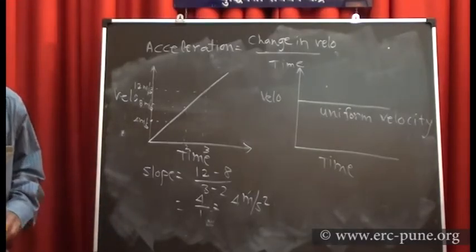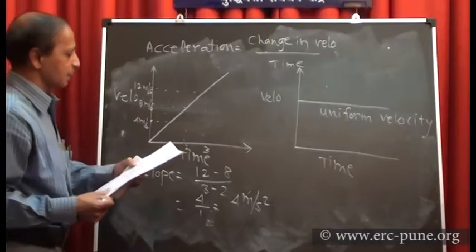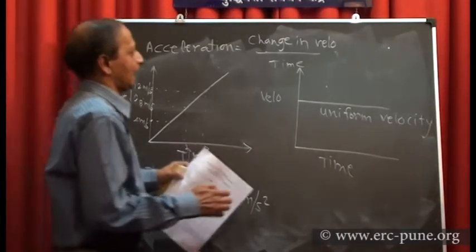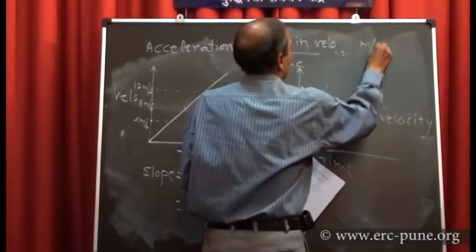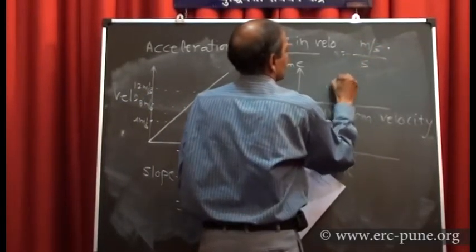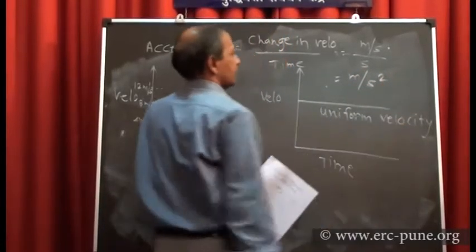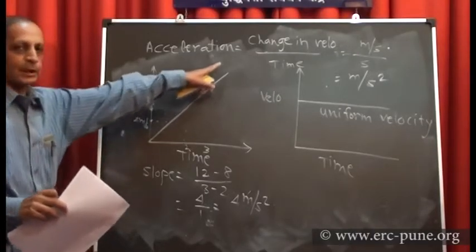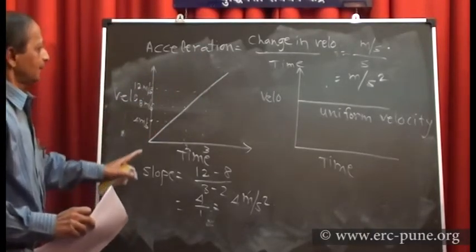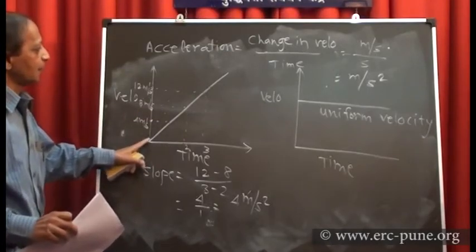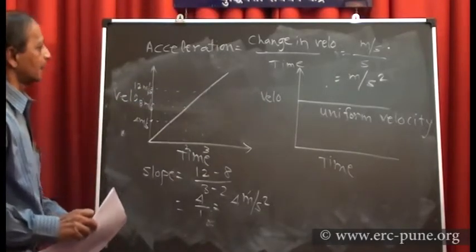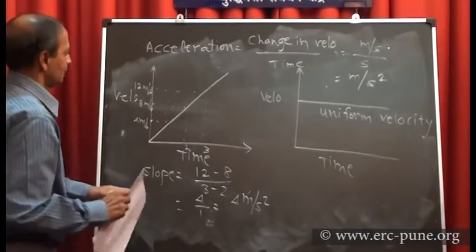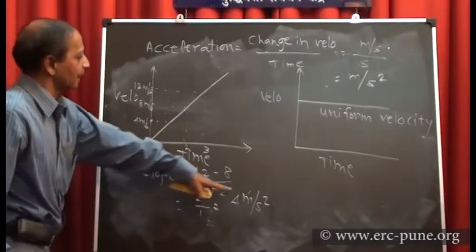So in this case the velocity is increasing uniformly because the graph is a straight line, meaning uniform acceleration. The body is accelerating at a uniform acceleration of 4 m/s².